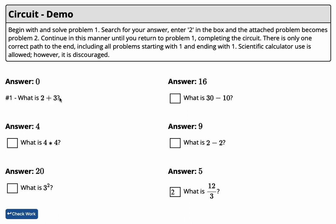What is 2 plus 3? We know that it's 5, so we search for our answer and enter 2 in the box, and the attached problem becomes problem 2. The answer is 5 right here, and this question becomes problem 2.